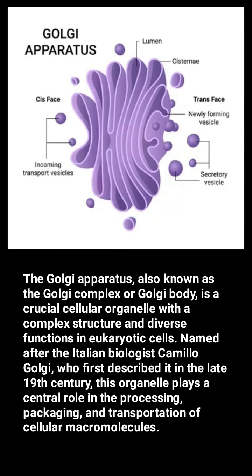The Golgi apparatus, also known as the Golgi complex or Golgi body, is a crucial cellular organelle with a complex structure and diverse functions in eukaryotic cells. Named after the Italian biologist Camillo Golgi, who first described it in the late 19th century, this organelle plays a central role in the processing, packaging, and transportation of cellular macromolecules.